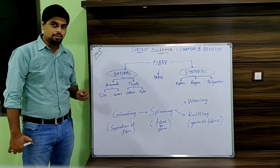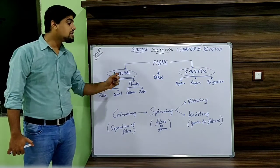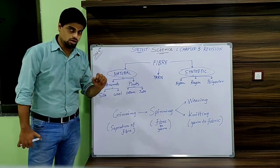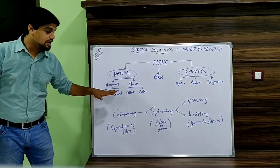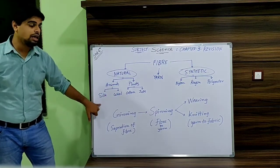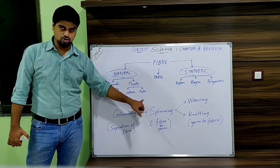In natural fiber they are obtained from two main resources: one is animal sources and another is plant sources. The examples of natural fiber that come under animal sources are silk and wool. And we have studied about cotton and jute.